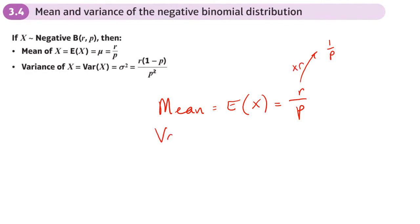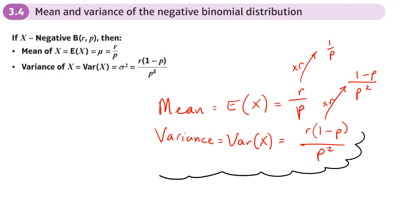And variance, Var(X), is equal to r times one minus p over p squared. And again, compare that to the variance of a geometric distribution. If you times that by r, you get that. So maybe if you remember one, it can help you remember the other without having to go back to the formula book.